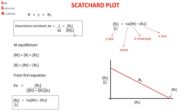At equilibrium, the total receptor concentration RT is equal to the free receptors plus the receptors which are bound to the ligand, that is the RL complex. So the free receptor equals total receptor minus the receptor-ligand complex. Putting this value of free receptor into our equation for Ka, we get Ka equals RL concentration divided by total receptor concentration minus RL complex concentration, multiplied by free ligand concentration.